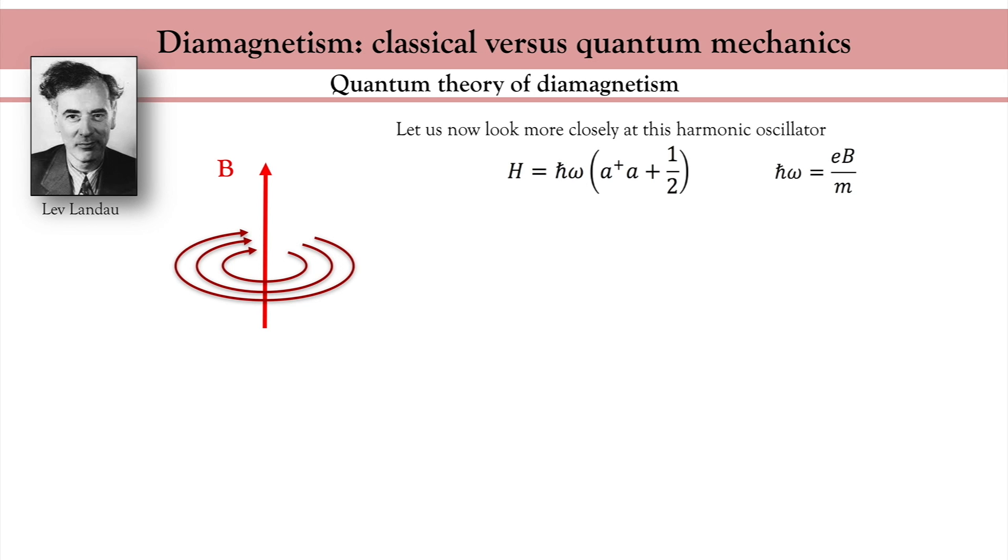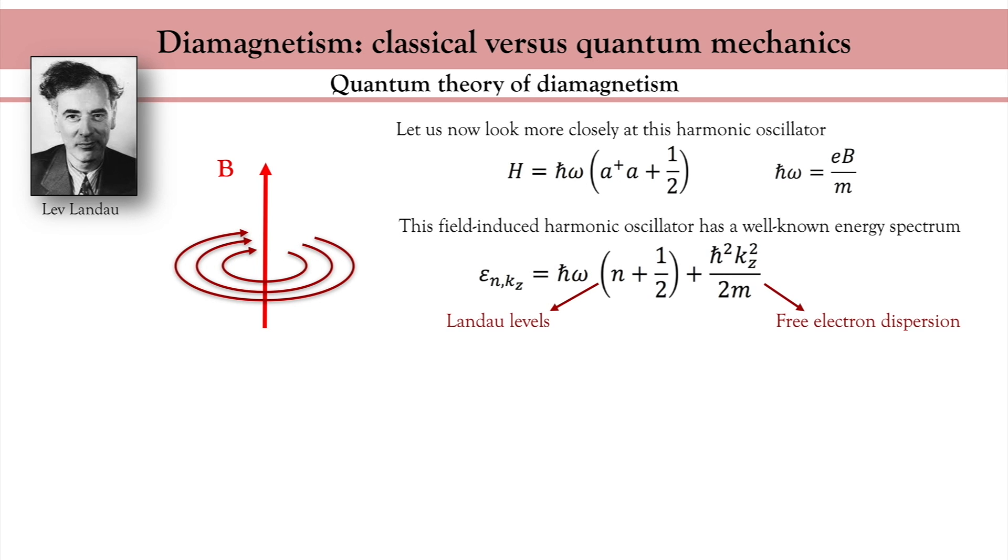Take a closer look at this Hamiltonian. In a harmonic oscillator, the energy spectrum is simply a collection of discrete energy levels equally spaced from each other. In my case, the magnetic field is applied along z, so it only confines the electron in the xy plane. Therefore, the eigenenergy is composed of two parts, a discrete set of levels called Landau levels and the free electron dispersion along z. Physically, these Landau levels reflect the quantization of the electron orbitals perpendicular to the magnetic field.